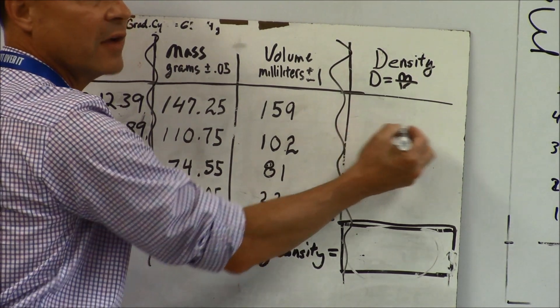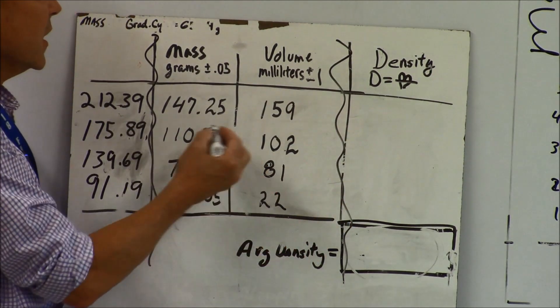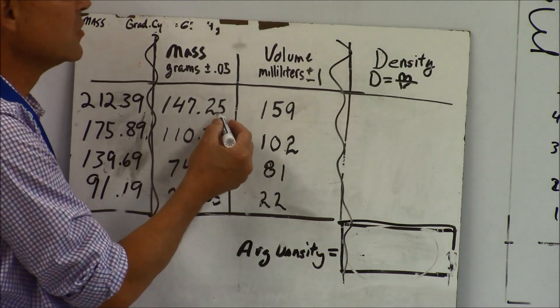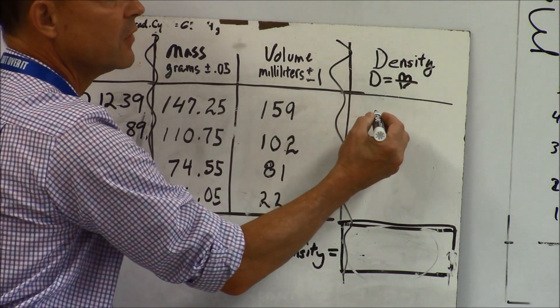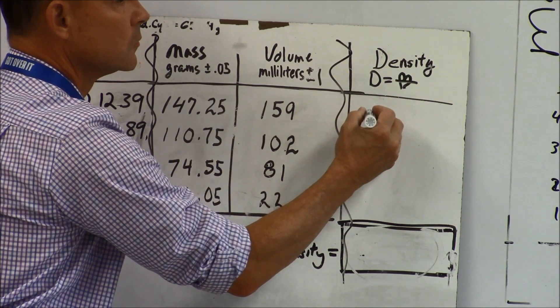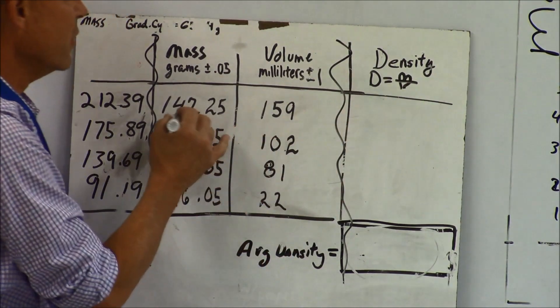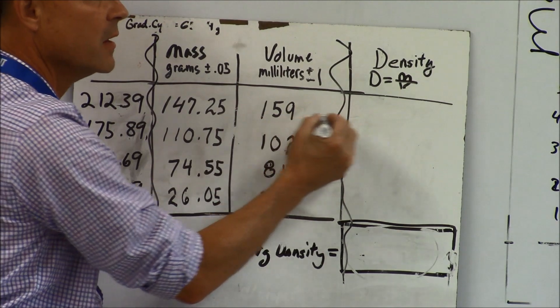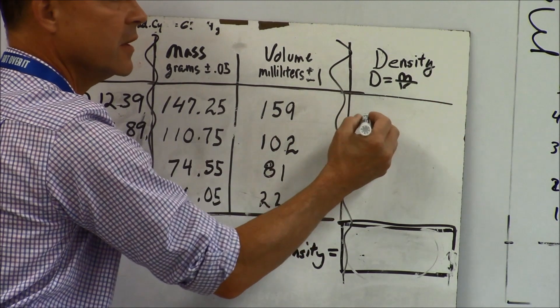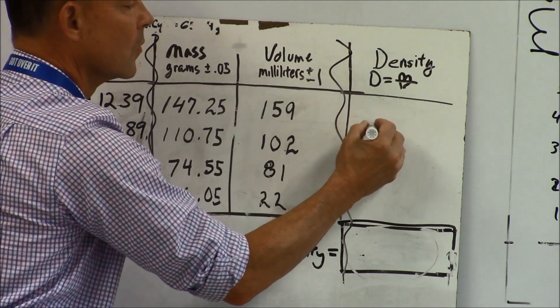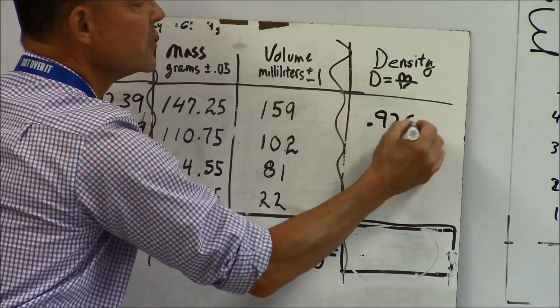What do you get when you divide 147.25 by 159? Mitchell, do you know what you get? You raised your hand like you're going to tell me. Malloy, what'd you get? Point nine two six.